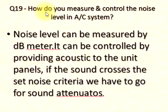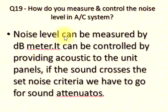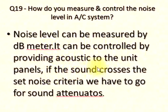Q19: How do you measure and control the noise level in an AC system? Noise level can be measured by a dB meter. It can be controlled by providing acoustic treatment to the unit panels. If the sound crosses the set noise criteria, we have to go for sound attenuators.